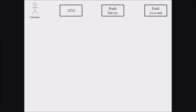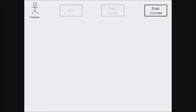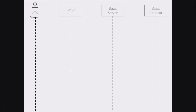In our ATM transaction example, the customer is represented with the actor symbol with the name at the bottom. The three objects are ATM, bank server, and bank account, each represented with a rectangle bearing its respective name. Next we represent the lifeline — that is, the vertical dashed line — for customer, ATM, bank server, and bank account.